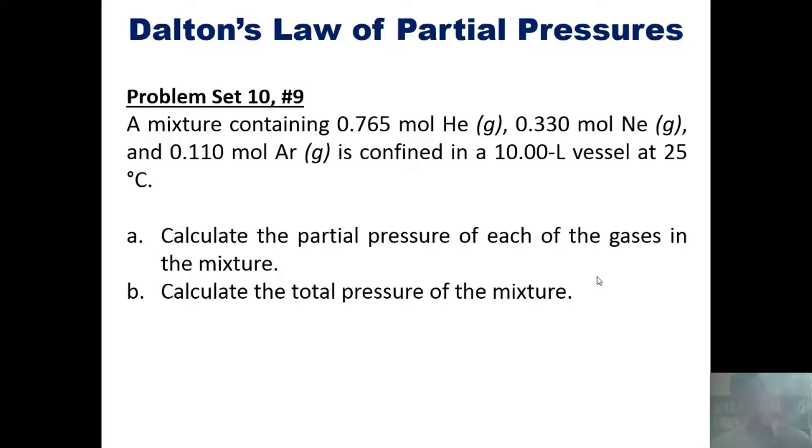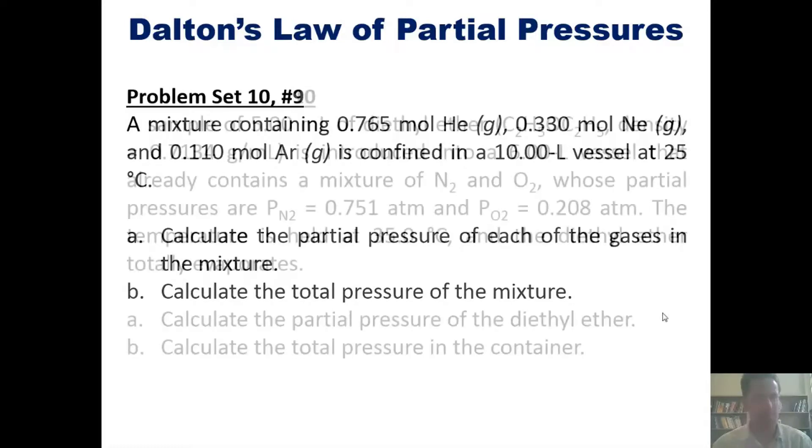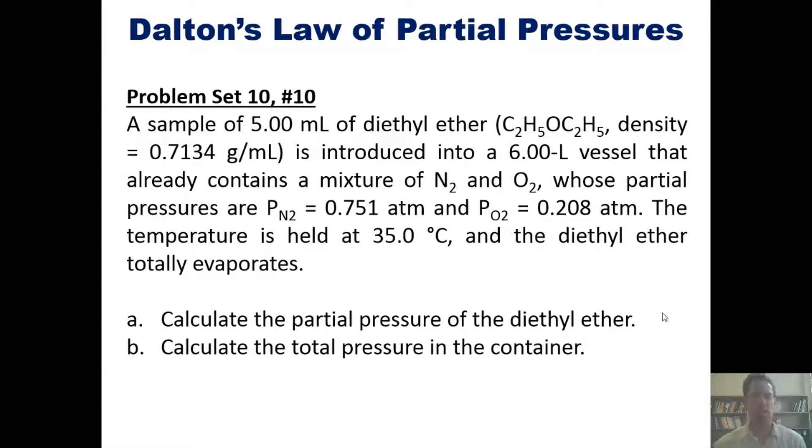And separately, a sample of 5.00 mL of diethyl ether (C₄H₁₀OC₂H₅, density = 0.7134 g/mL) is introduced into a 6.00-L vessel that already contains a mixture of N₂ and O₂, whose partial pressures are P_N₂ = 0.751 atm and P_O₂ = 0.208 atm. The temperature is held at 35.0°C, and the diethyl ether totally evaporates.